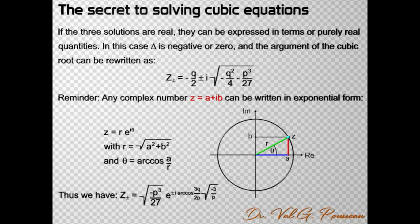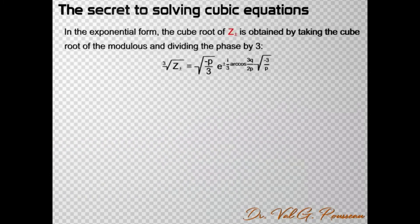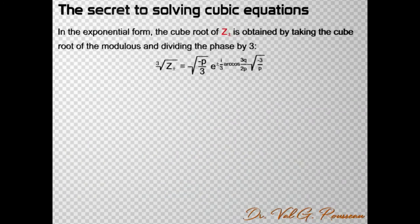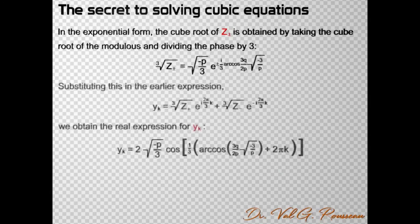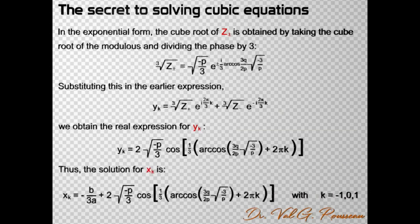The advantage of the exponential form is that it makes it easy to take the cube root of the complex number z±. Simply take the cube root of the modulus and divide the phase angle by 3. Substituting this expression into the expression for y and using Euler's formula for converting a sum of conjugate exponentials into a cosine, we obtain a real expression. And finally, x is obtained by subtracting b/3a. And we are done!